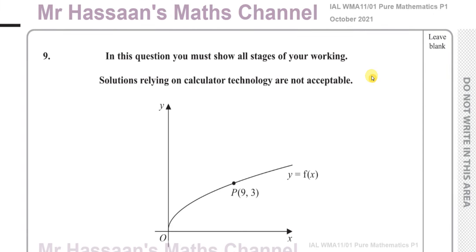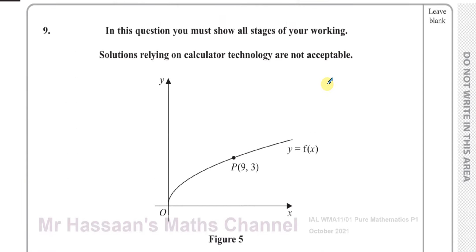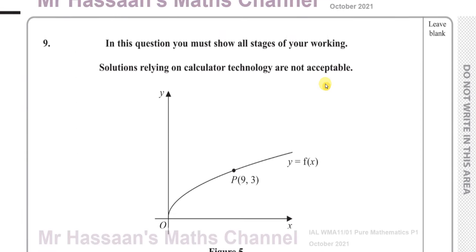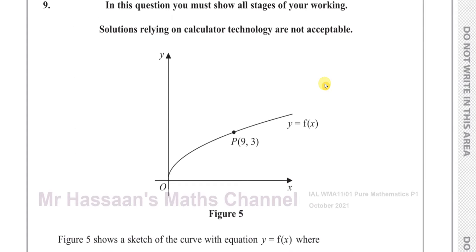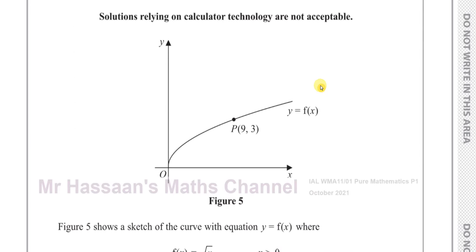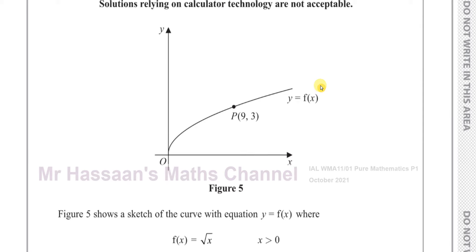In this question you must show all your stages of working. Solutions relying on calculator technology are not acceptable — that applies to simplifying the third section as well. Figure 5 shows a sketch of the curve with equation y equals f of x, where f of x is equal to the positive square root of x, and x is greater than 0.